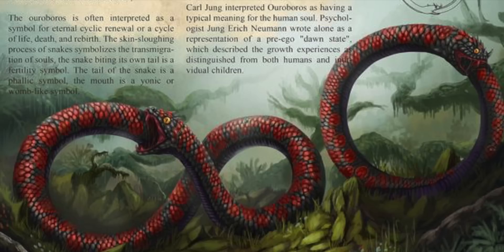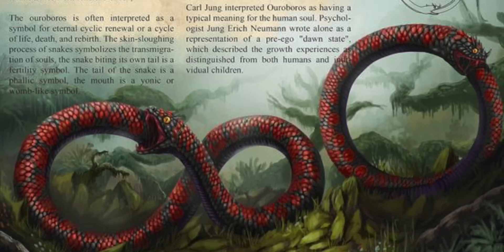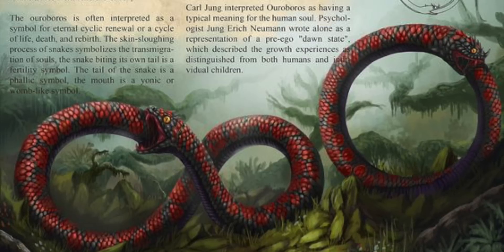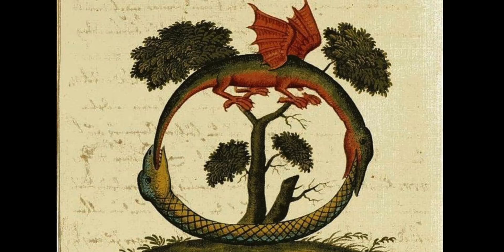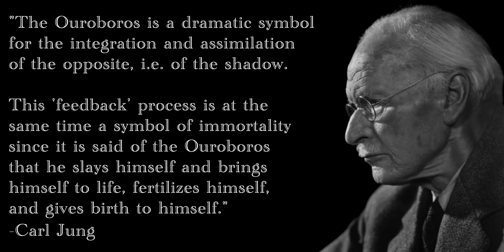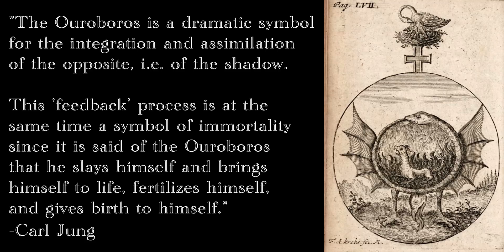Quoting every mystic's favorite psychologist, Carl Jung, the Ouroboros is a dramatic symbol for the integration and assimilation of the opposite, i.e. of the shadow. This feedback process is at the same time a symbol of immortality, since it is said of the Ouroboros that he slays himself and brings himself to life, fertilizes himself, and gives birth to himself.